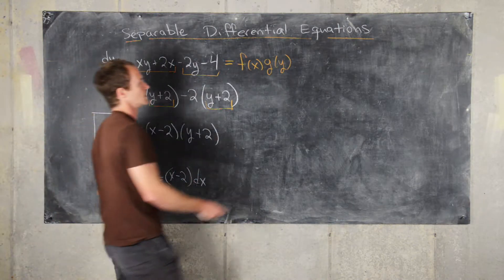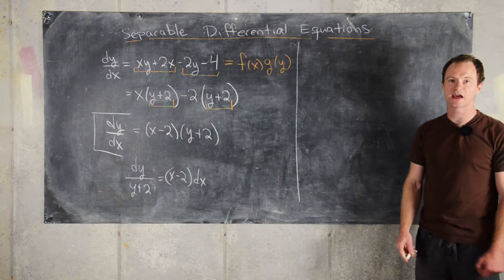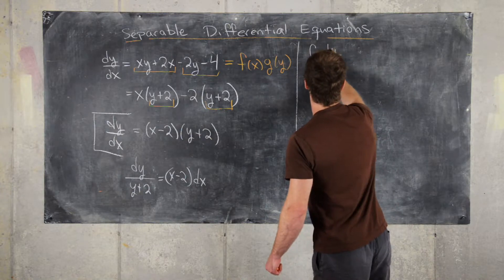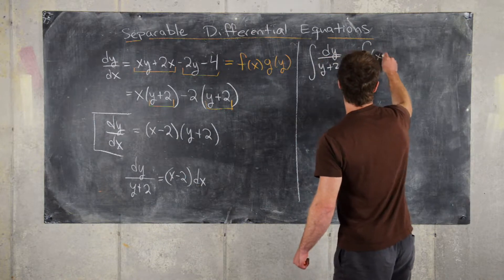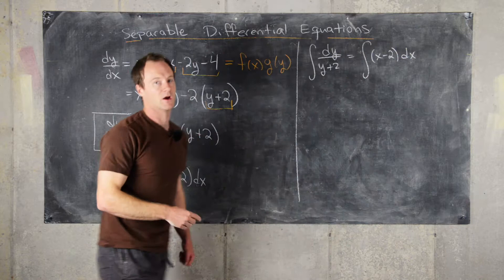From here, we can take the antiderivative of both sides. We'll have the antiderivative of dy over (y plus 2) equals the antiderivative of (x minus 2)dx.